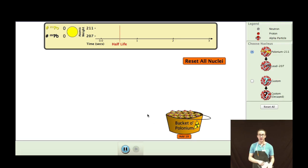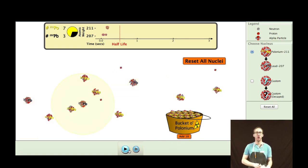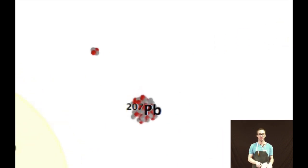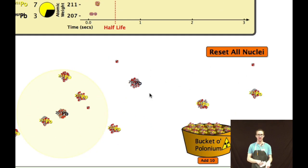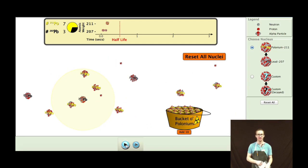Here is a thrilling animation in which you can watch atoms undergo alpha decay. I've got a bucket of polonium here. I'm going to add 10 atoms of polonium. As you watch carefully, you will see that the polonium decays by alpha emission into lead-207. These little particles that you see flying out are your alpha particles.